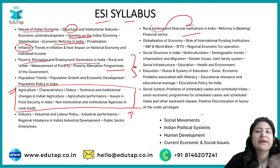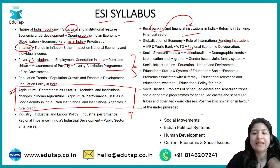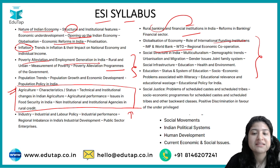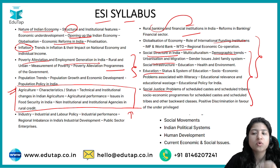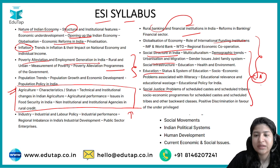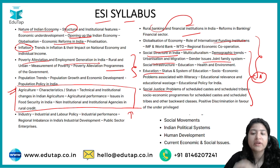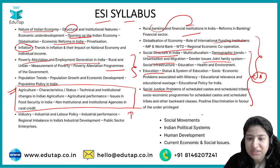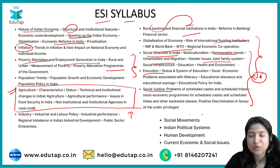Apart from that, you should know the banking structure and financial institutions in India, as well as different funding institutions at the national and international level. Regarding the social structure in India — covering demographic trends, urbanization, migration, education, and social justice — it has been observed that more current affairs questions are asked from these topics rather than from the static portion.